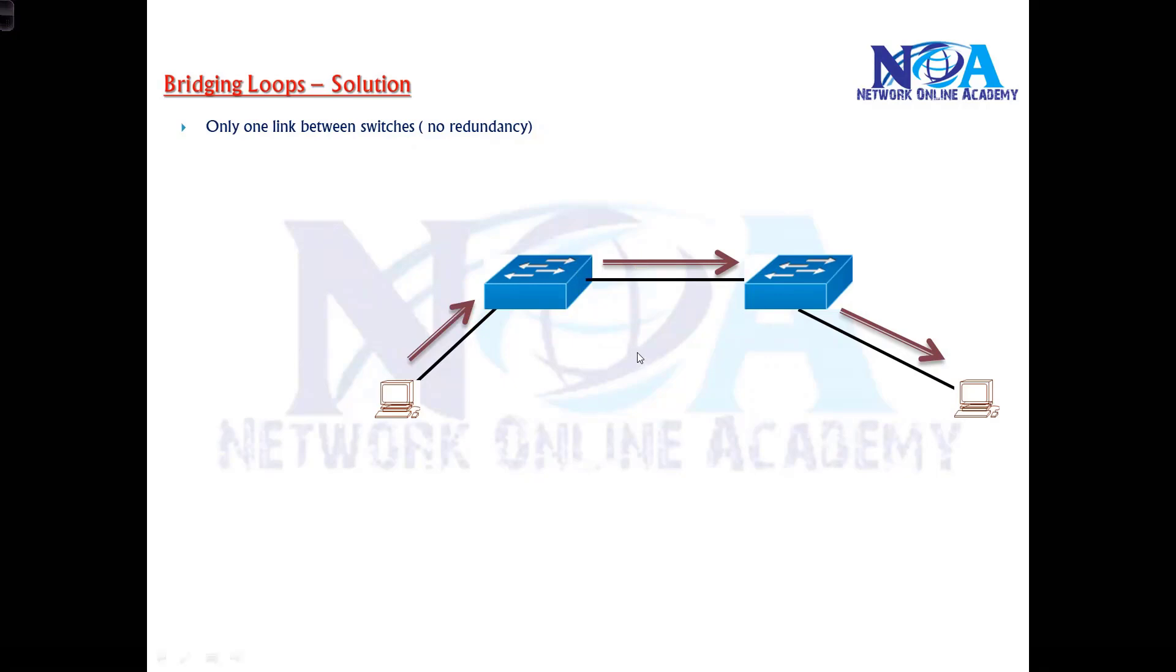So we want a solution which will provide us the redundancy. At the same time, it will prevent the loops. Typically we'll be using multiple links, and we can say that when I'm using two links, I'll ensure that any one of the link is actually forwarding the traffic, and the other one is temporarily disabled.